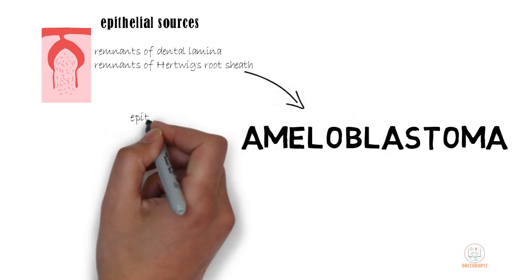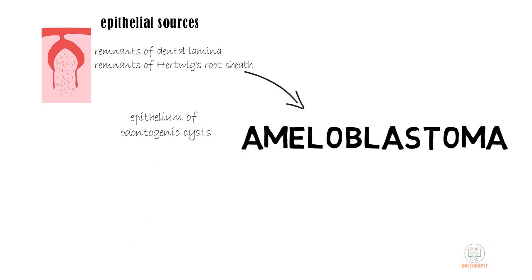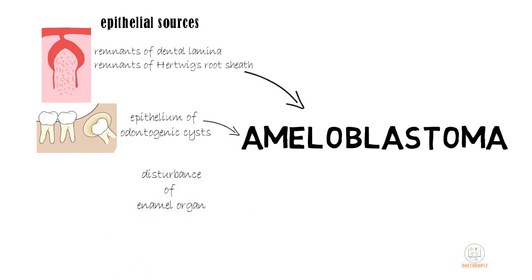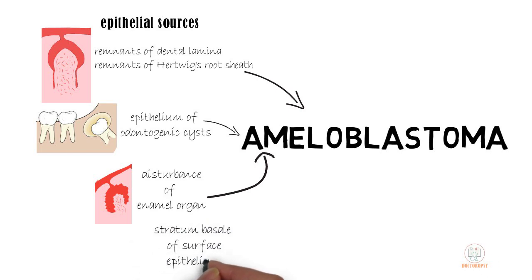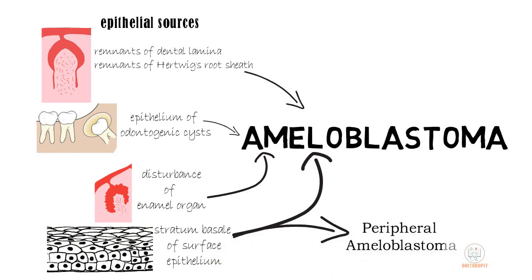It may also develop from the epithelium of any odontogenic cyst, particularly the dentigerous cyst. Any type of disturbance of the developing enamel organ may also give rise to ameloblastoma. Finally, cells of the stratum basale of the surface epithelium have been considered an important source, especially in peripheral ameloblastoma.